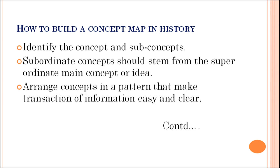Now let us talk about how to build a concept map in history. First, identify the concept and sub-concepts. Then, subordinate concepts should stem from the superordinate main concept, as we do in the hierarchical, flowchart, spider, or systems concept map. Arrange concepts in a pattern that makes the transaction of information easy and clear, because if you fail to do this, the entire purpose of the concept map is defeated.